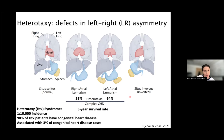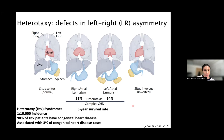Heterotaxy is not a trivial syndrome, as it's typically associated with cardiovascular malformation. To illustrate how important proper lateralization is: 90 percent of patients born with heterotaxy are also born with congenital heart disease — the most common survivable birth defect — which results from abnormal heart development.